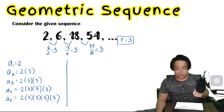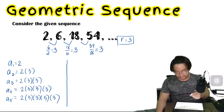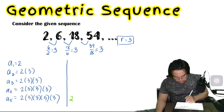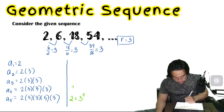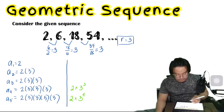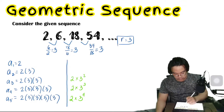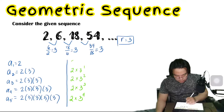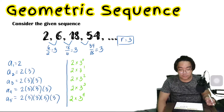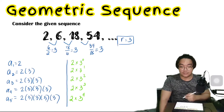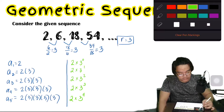Writing this in exponential form: a₅ equals 2 times 3 to the 4th power, a₄ equals 2 times 3 to the 3rd power, a₃ equals 2 times 3 to the 2nd power, a₂ equals 2 times 3 to the 1st power, and a₁ is simply 2, which is 2 times 3 to the 0 power. Since any non-zero number raised to 0 equals 1, 2 times 1 gives us 2.